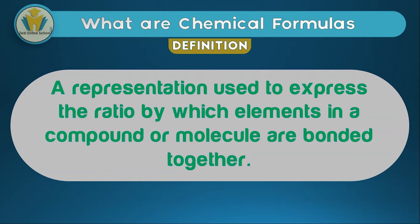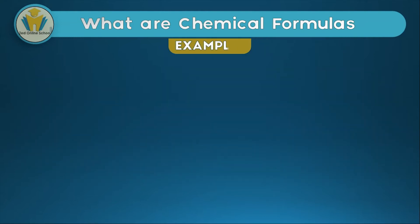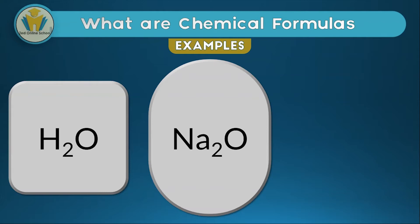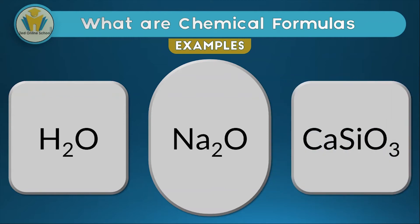There's the word ratio there — therefore a chemical formula will show the same ratio for the same compound. For example, sodium oxide is written the same way by anyone who knows chemical formulas. Another example is water, which we usually drink. Another example is calcium silicate. So chemical formulas range from very simple to very complex.